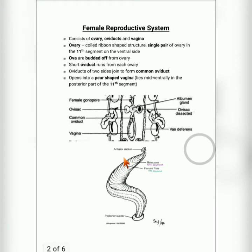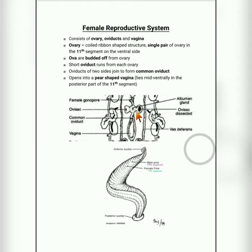In the female reproductive system, only three parts are present: ovary, oviducts, and vagina. Only one pair of ovaries is present. The ovary is a coiled and ribbon-shaped structure. The two ovaries are found in the 11th segment on the ventral side, from which ova bud off.